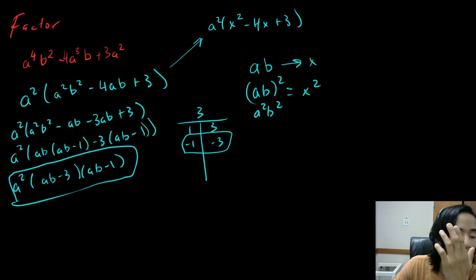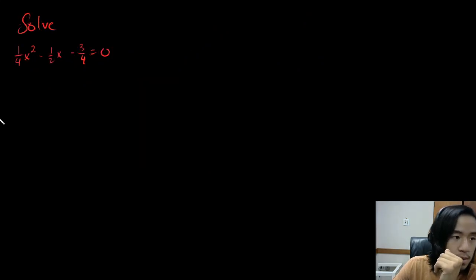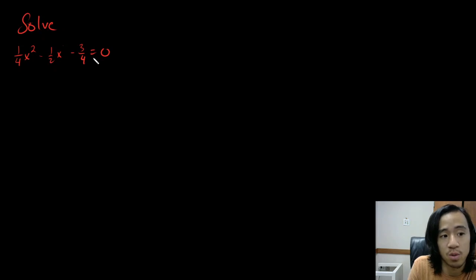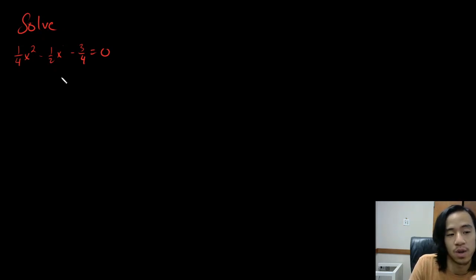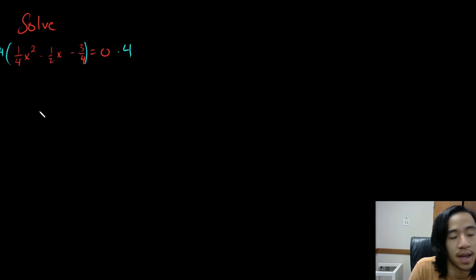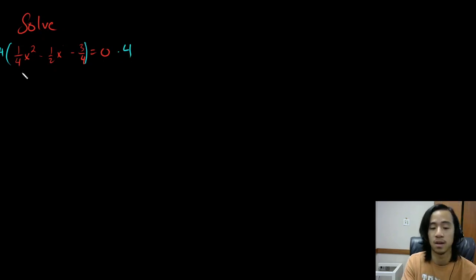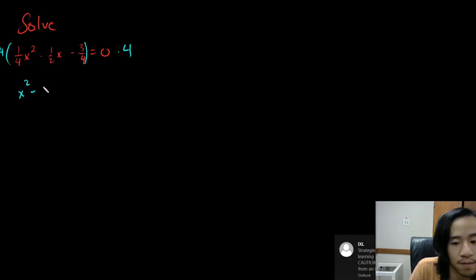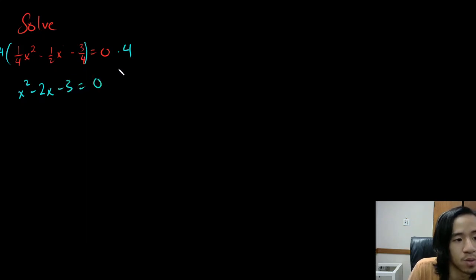I know this video is getting long but we have one more example — it's going to be a solving example. This might look intimidating, and I do that on purpose so you can learn. The first thing you want to do with solving something like this is get rid of the fractions, because we have an equal sign and we can do stuff to both sides. If I multiply both sides by four, I can get rid of all these fractions because I'm multiplying by the least common denominator. So four times one fourth is one: x squared. Four times one half is two: two x. Four times three fourths is negative three. And it equals zero times four, which is zero. So now I just have a normal factoring question.